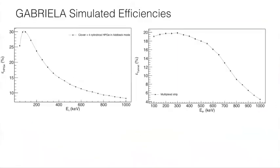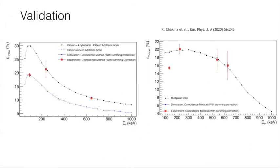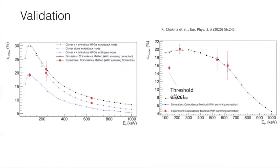Using the experimental position distributions and the implantation depth, we obtained the absolute gamma-ray detection efficiency of the germanium detectors and the electron detection efficiency of the tunnel detectors. A calibration run produced a 117 microsecond isomer in Rn-209 consisting of two 238 keV M2 and 644 keV E2 transitions, which was used to validate the simulation results. After taking into account summing effects inside the detectors, our experimental points lie close to the simulation curves.